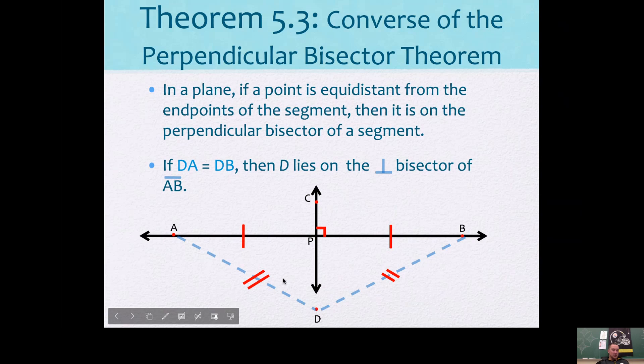And obviously, if these aren't the same, then this point D is not on the perpendicular bisector. And again, it goes back to the fact that you have an isosceles triangle here.